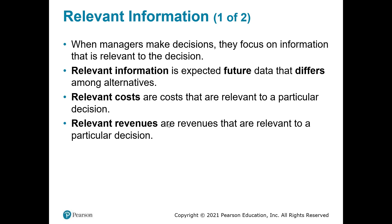To do this you need to decipher what's relevant information and what's not relevant information. There's a lot of things that go on within the operations of a company and many of those things are completely irrelevant to a decision. Take rent of your production facility for example — you have the option to make a ton of different products, but no matter what products you make within that one facility you're going to pay the same amount of rent. That cost is irrelevant because it does not change between your different decision alternatives.